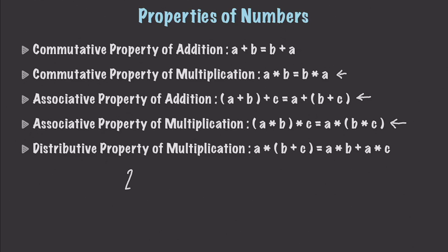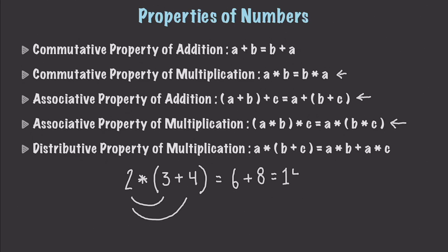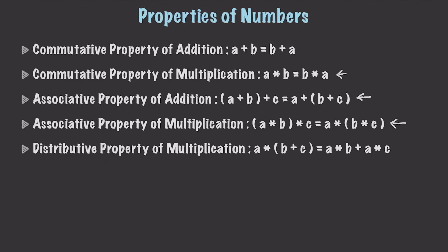Let's take 2 times (3 plus 4). What this means is if we want to solve this, we are first going to multiply 2 times the 3, and then we're going to multiply 2 times the 4, and then add those values. So 2 times 3 is going to be equal to 6, and then plus 2 times 4, which is going to be equal to 8. And of course that is going to be equal to 14. You just have to multiply whatever value is on the outside times each of the individual terms and then add the sum together.